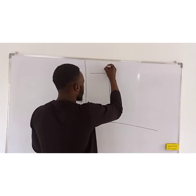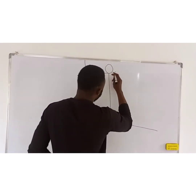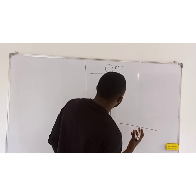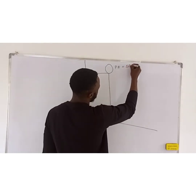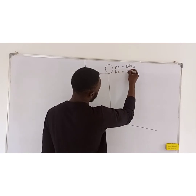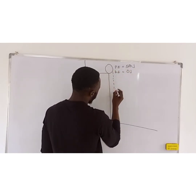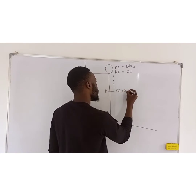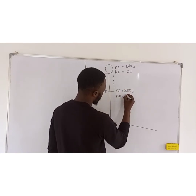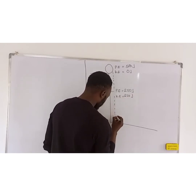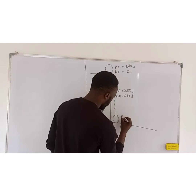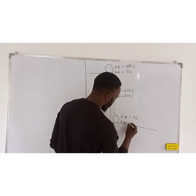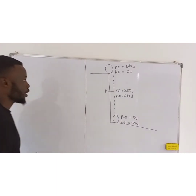If there is a stone placed at a height, at that point the potential energy equals 500 joules and the kinetic energy is 0 joules. Once it reaches the middle height, the potential energy becomes 250 joules and the kinetic energy becomes 250 joules. Once it reaches the ground, the potential energy becomes 0 joules and the kinetic energy becomes 500 joules.